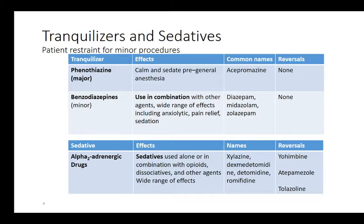Tranquilizers and sedatives are used for restraint during minor procedures or to prepare the patient for an induction agent or general anesthesia. Phenothiazines are major tranquilizers and benzodiazepines are minor ones. Phenothiazines calm and sedate for pre-general anesthesia — the most common is acepromazine. There is no reversal for acepromazine, so we have to be careful. It can cause seizures, especially in animals more prone to them.